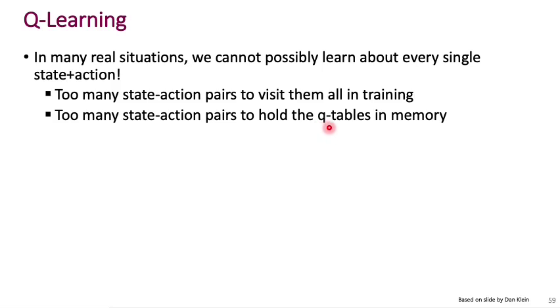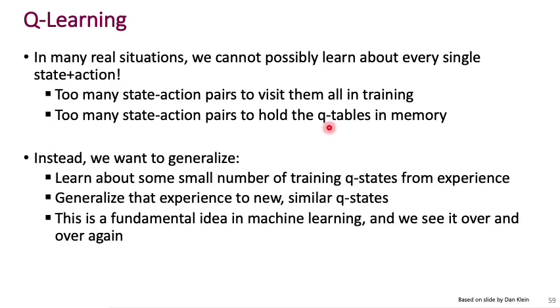We only have to have the correct representation of images so that we can then generalize. And there is a very similar logic to how we will proceed now in this Q-learning setting, where we want to be able to generalize to new states that we haven't seen before by only learning from some small number of training Q states that we've encountered. And from that, we should generalize to new similar Q states. And the way to do that is by building abstractions like we've seen before in machine learning.